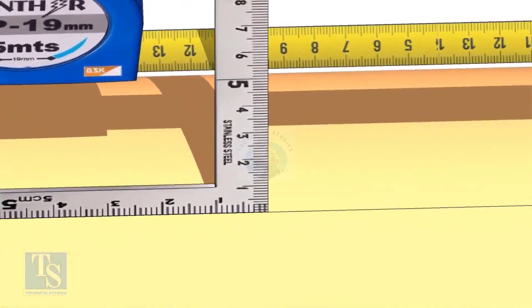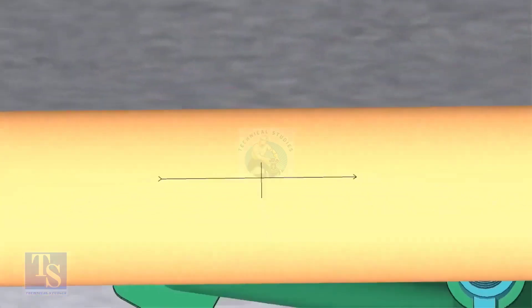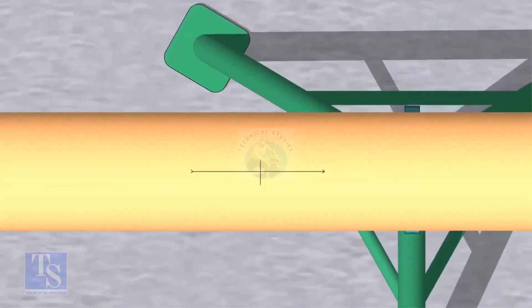Mark on the pipe where the right angle edge touches. This is the center of the OLET. Punch mark the center.